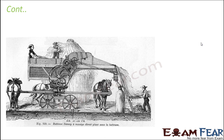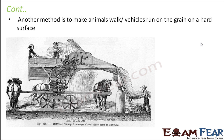Sometimes threshing is done with the help of animals — animals are made to walk on the grain on a hard threshing floor, which is equivalent to beating. Sometimes vehicles are run on the grain instead, reducing manual labor. These are some alternative traditional methods of doing threshing manually.